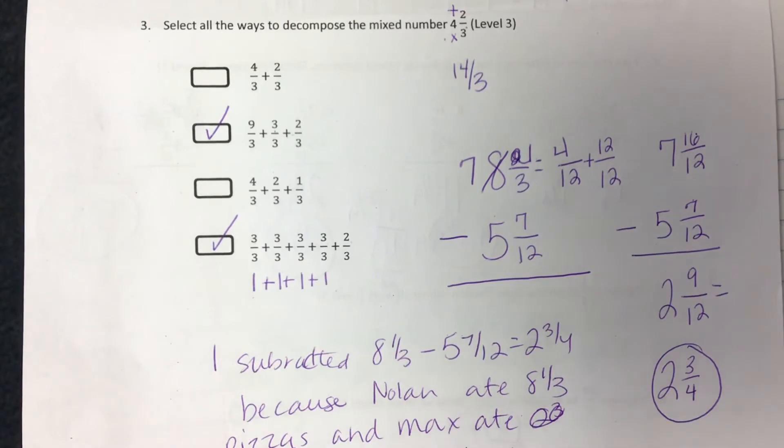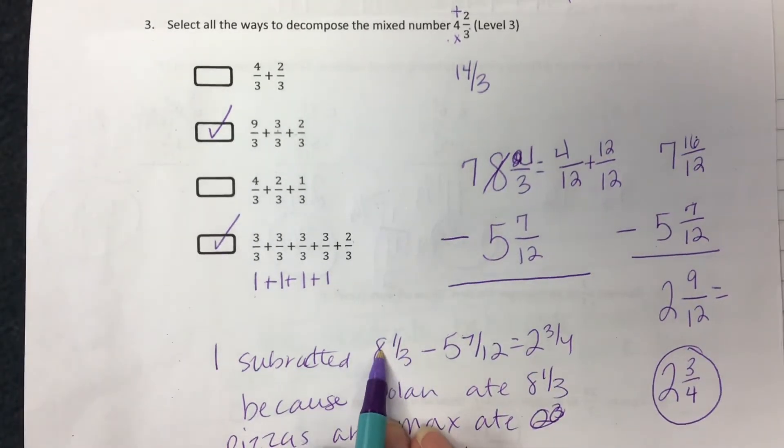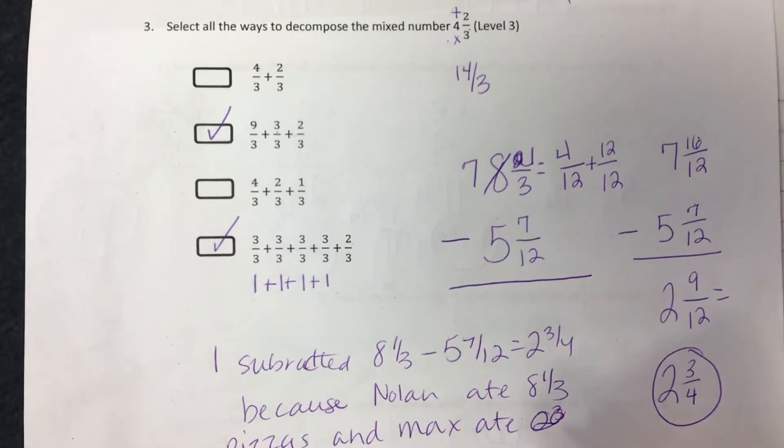You don't have to say I had to multiply eight one-third times four over four to get a common denominator.